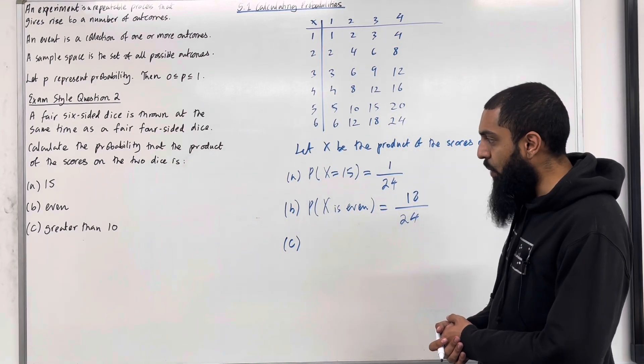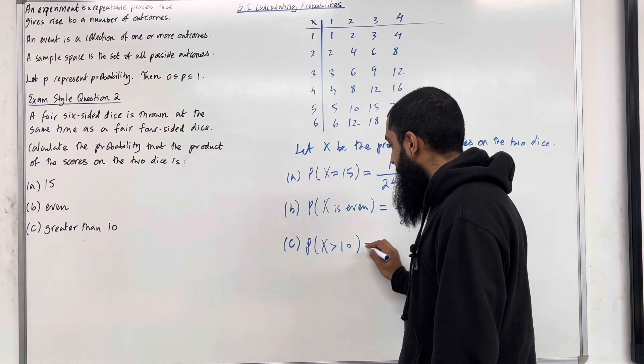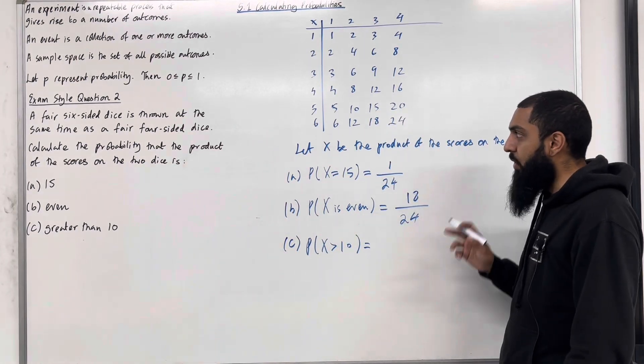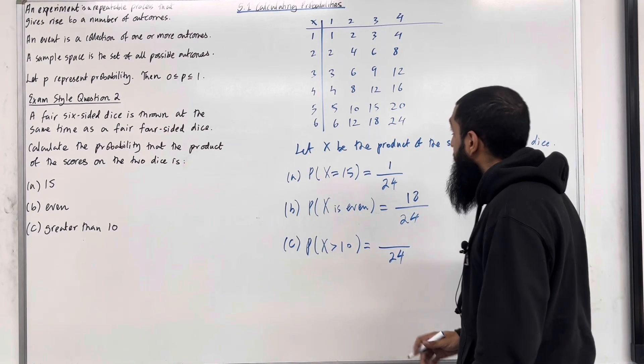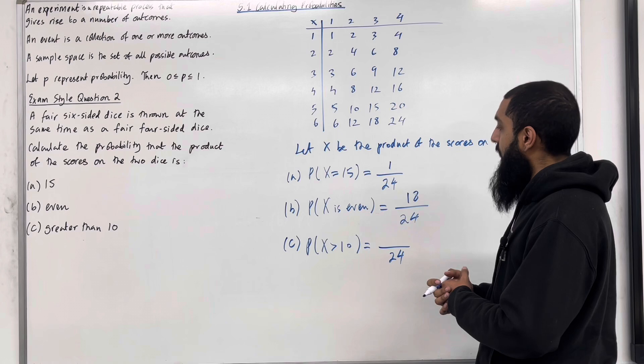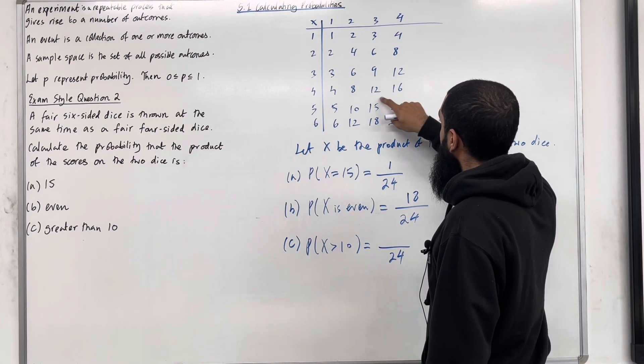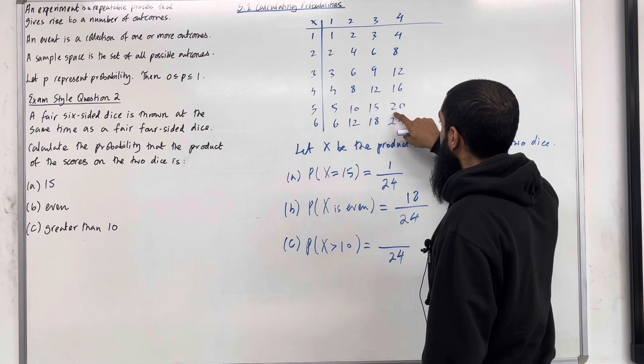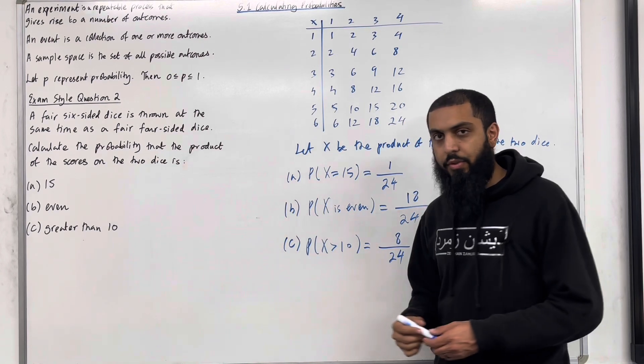Now, in part C, we want the probability that X is greater than 10. So we want all the scores that are greater than 10. Again, the probability is out of 24. Let's have a look at the scores that are greater than 10. We've got 1, 2, 3, 4, 5, 6, 7, 8. 8 out of 24.